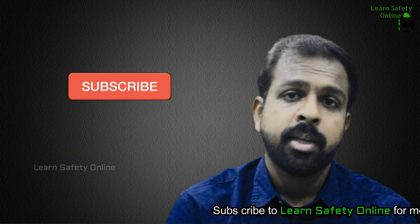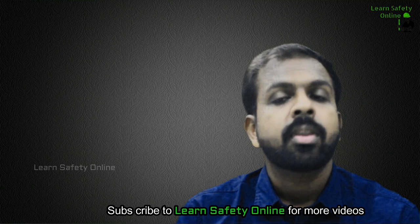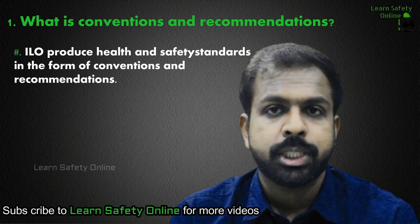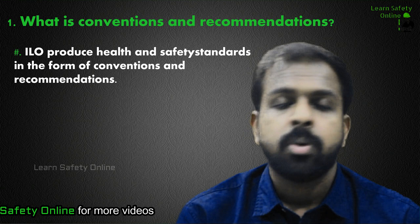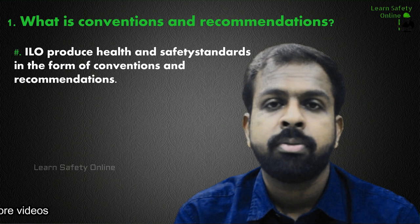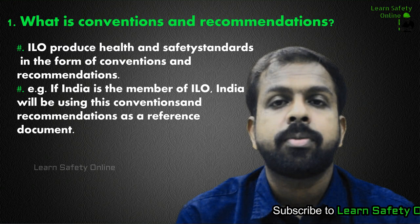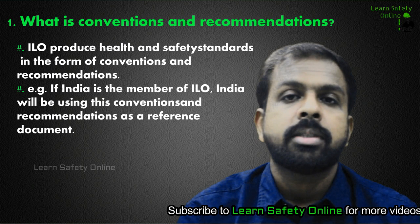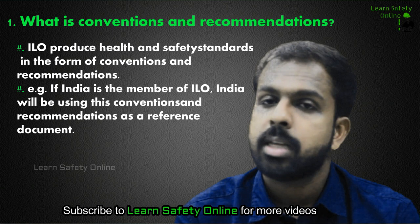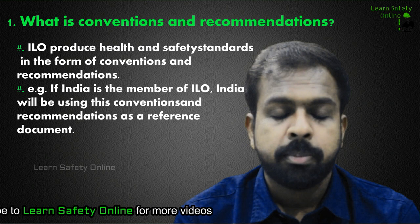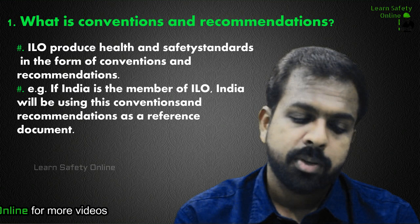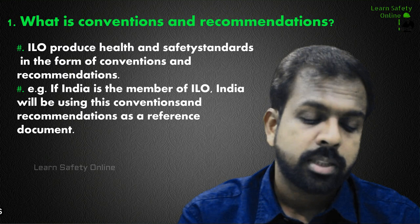Without further delay, let's get started. Our first question is: what are conventions and what are recommendations? The International Labour Organization, or ILO, produces health and safety standards in the form of conventions and recommendations. These are the output of the ILO. For example, if India is a member of the ILO, India will set health and safety standards as per the conventions and recommendations, using this document as a reference.